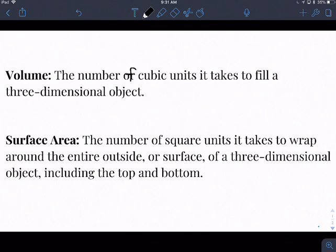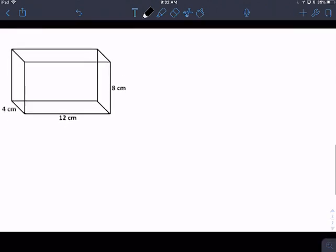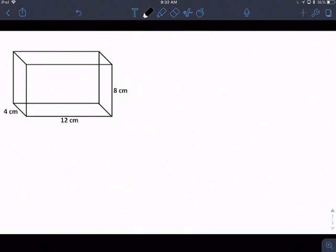So it can mean different things for different shapes depending on what they are. But for our purposes, it's going to be all of the sides, the areas of each of the sides combined. So let's take a look at our first example. We have a rectangular prism, and our rectangular prism is 4 centimeters by 12 centimeters, and it is 8 centimeters tall.